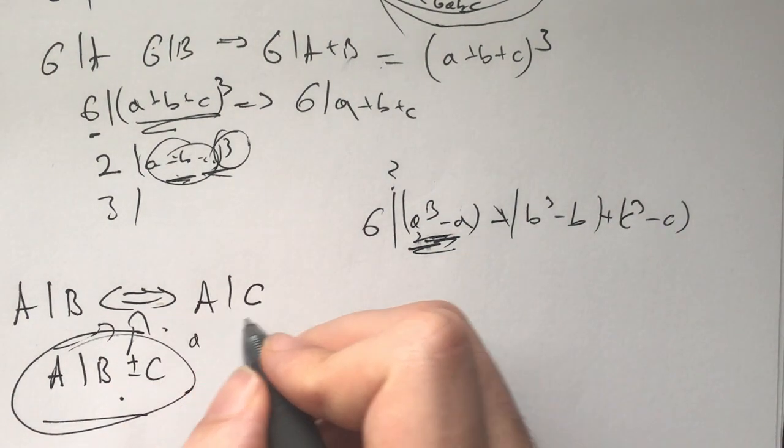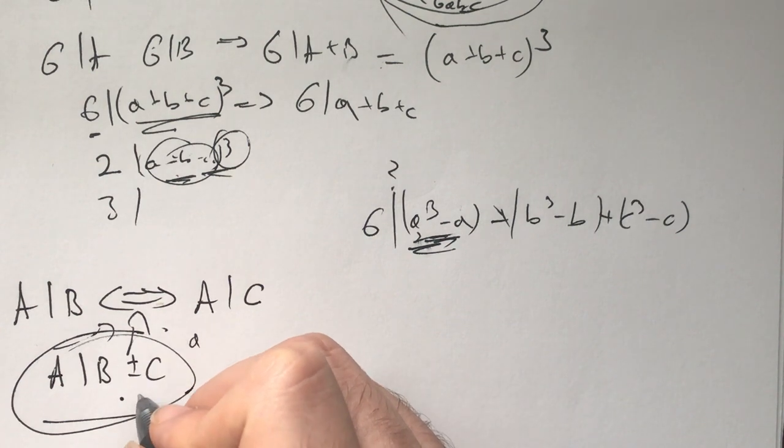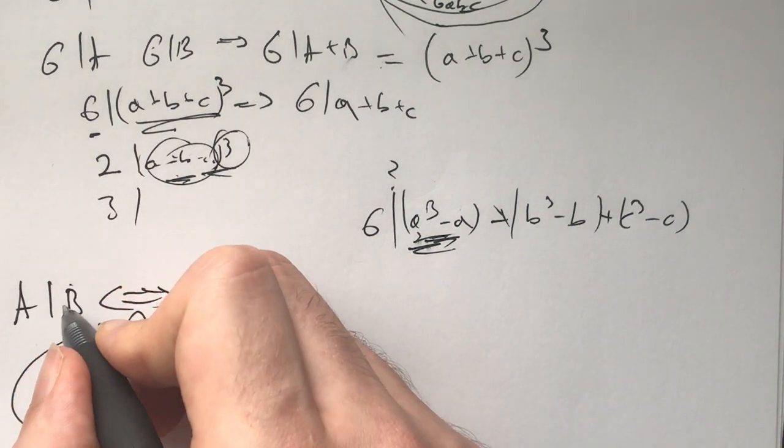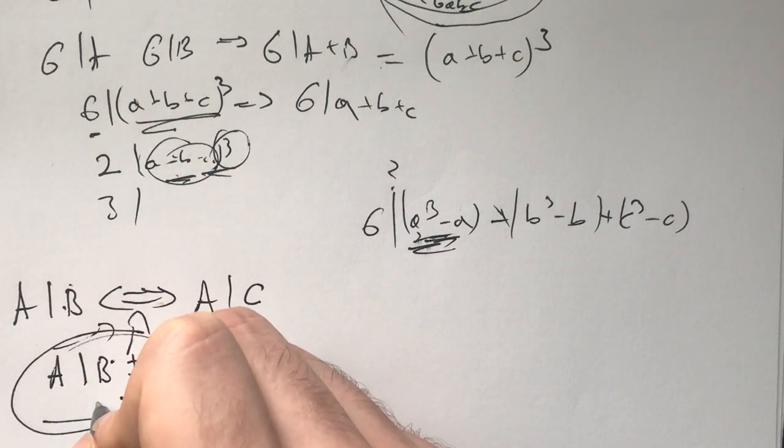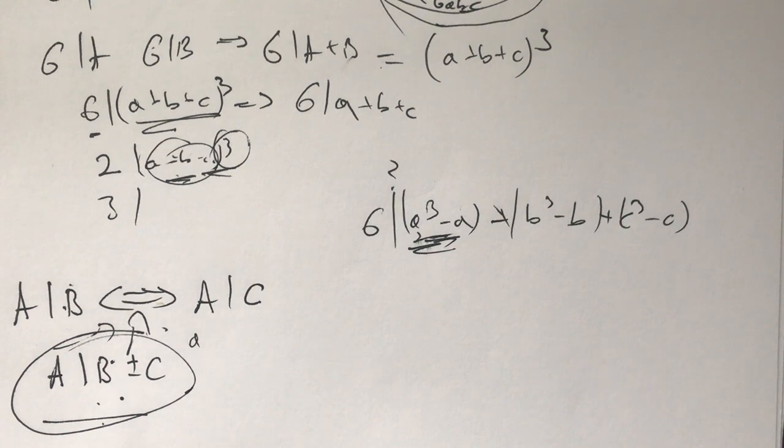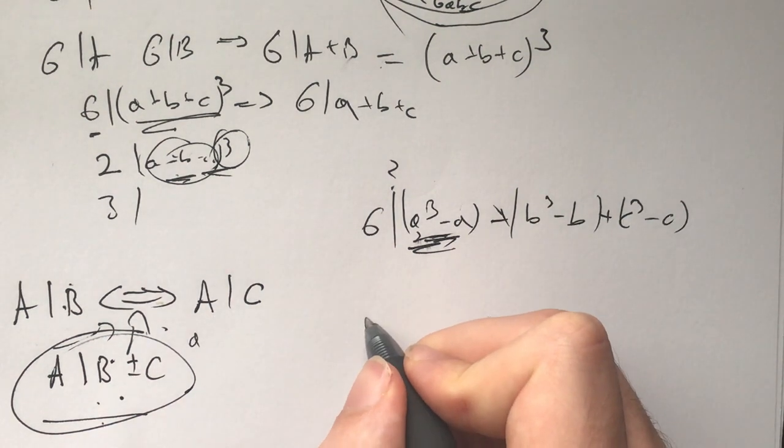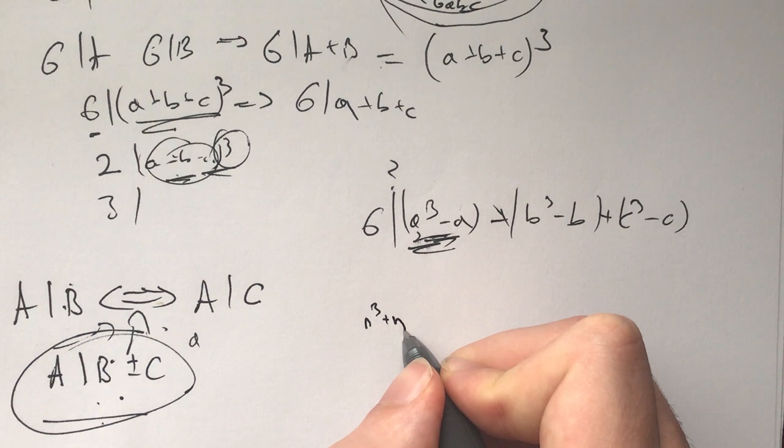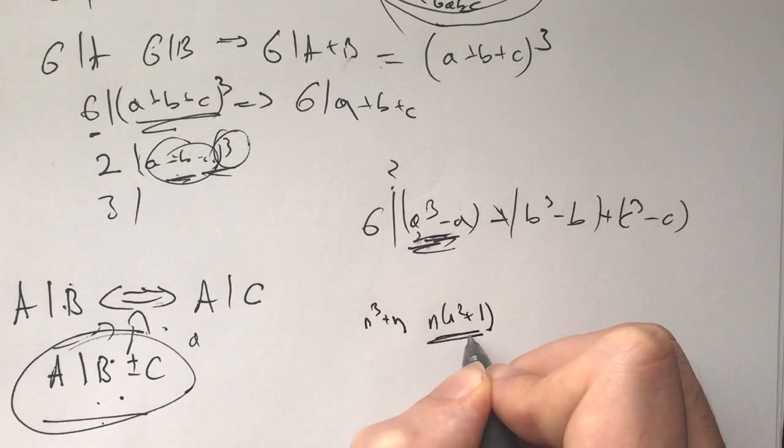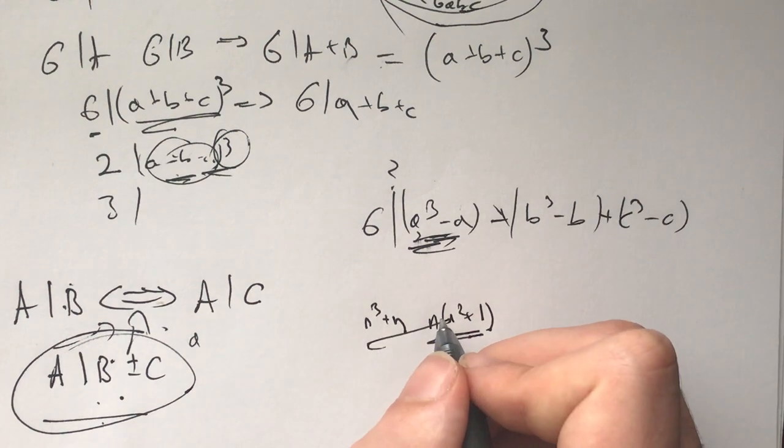We could also do, like, I think, can we do plus here? No, plus would not. If we prove that a divides this plus c. Yeah, that's also true. Like, what am I saying? Or is it? Wait, that's n cubed plus n. That's n times n squared plus 1. This isn't going to be divisible by 3. So, interesting.